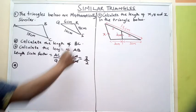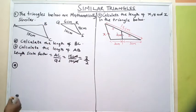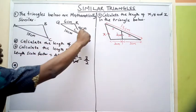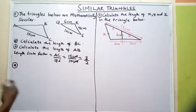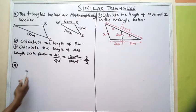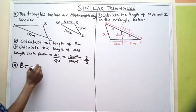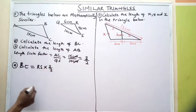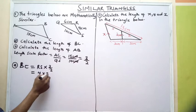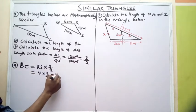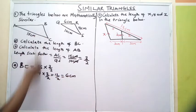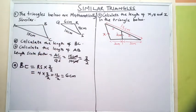If I am moving from a smaller side to a bigger side, I am going to multiply the smaller side by the length scale factor. If I am moving from the larger side to the smaller side, I am going to divide the larger side by the length scale factor. To get BC, because I am moving from RS to BC, I multiply: RS is 4 multiplied by 3 over 2, which gives me 12 over 2, which is 6. So BC is 6 cm. You can see that BC is larger than RS.